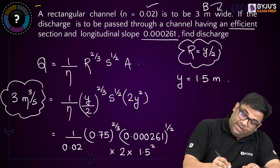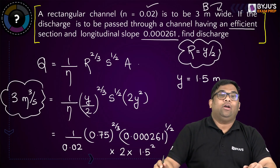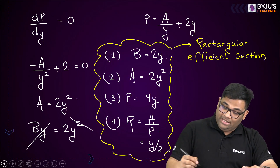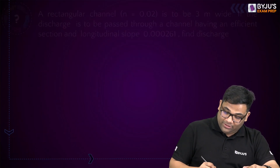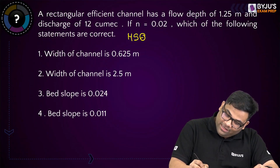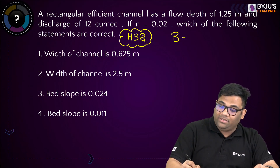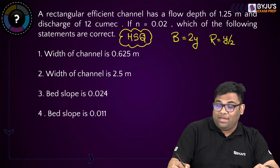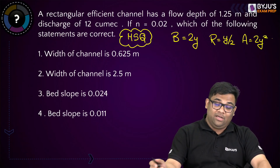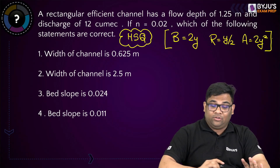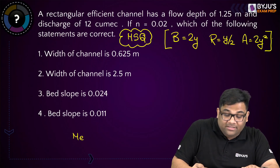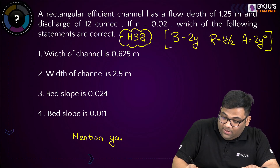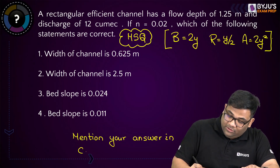This question can be a 2-mark question in GATE, and you can solve it nicely because you know all these conclusions. Now I will give you one MSQ question as homework — again a rectangular efficient section. Use b = 2y, R = y/2, area = 2y², and Manning's equation to solve it. Write your answer in the comment section.